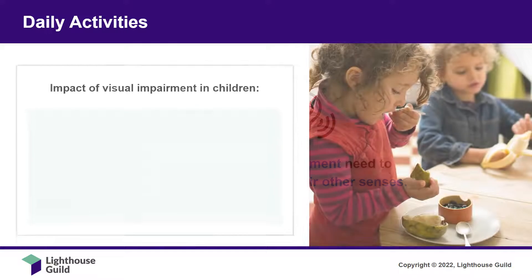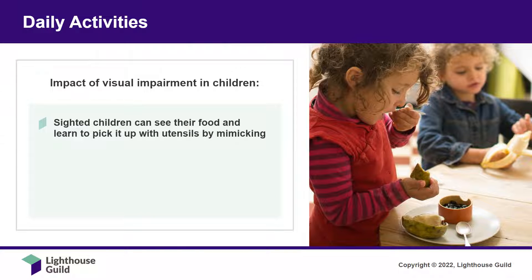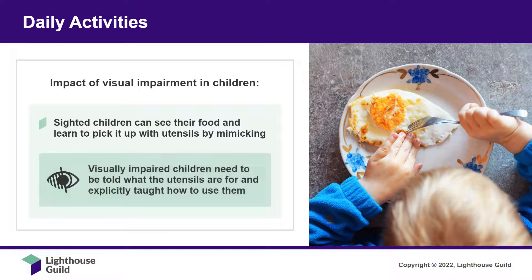For example, sighted children can see the food on their plate and learn to pick it up with eating utensils by mimicking others' behavior and with practice. Without the benefit of the same visual cues, children with visual impairment may need to be told what the utensils are used for. They may need to be deliberately taught, with hand-over-hand guidance, how to hold spoons and forks, and how to locate food on a plate, scoop it up, and bring it to their mouth.